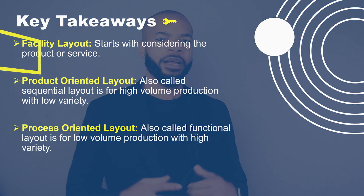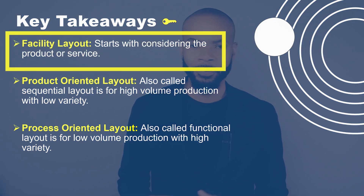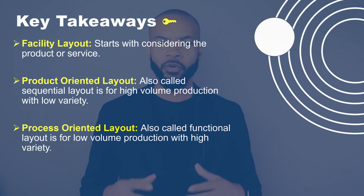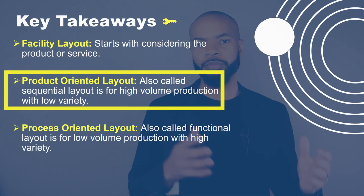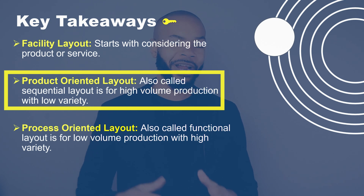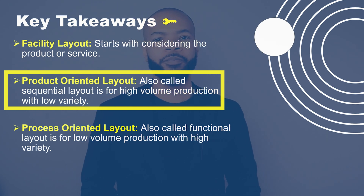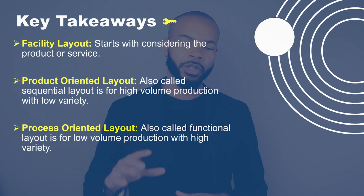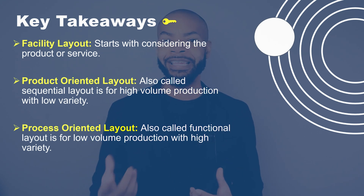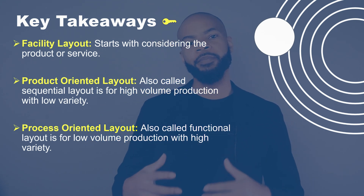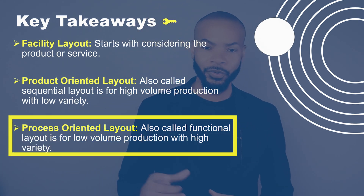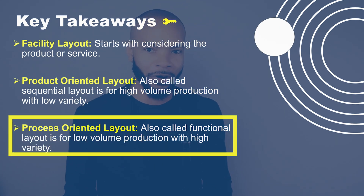Key takeaways: when choosing your facility layout, think about what you're producing. If it's just one product — the same thing or very similar products — you want to choose a product-oriented layout, also called a sequential layout. If you're producing different items at lower volume but with variety, then think about the process in which you produce those items — a process-oriented layout, also called a functional layout.